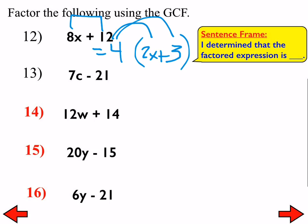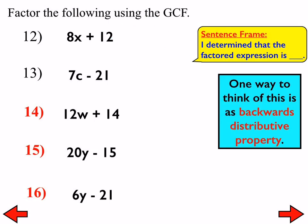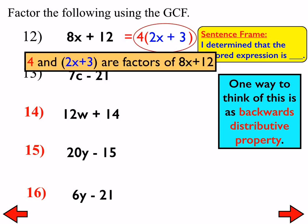Somebody said 3. Most of you said 3. So, that means 8x plus 12 factors into 4 times the quantity of 2x plus 3. So, 4 is a factor of 8x plus 12, but 2x plus 3 is also a factor of 8x plus 12. And, once again, one way to think of this is backwards distributive properties. So, we have 4 times the quantity of 2x plus 3. And, once again, 4 and 2x plus 3. Both of them are factors of 8x plus 12.